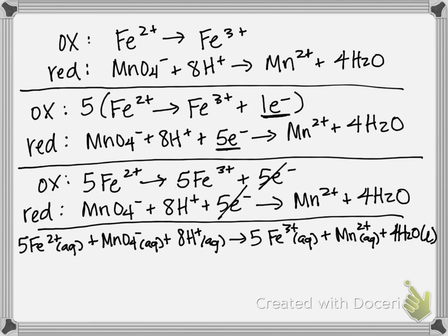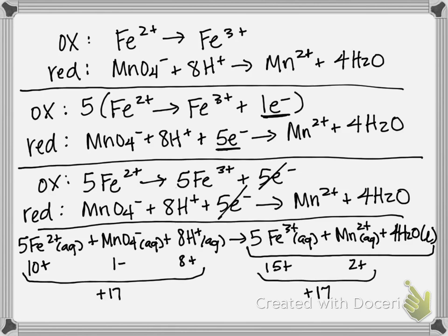If you want to go ahead and check your charges, they should both add up to plus 17. You have 5 times 2 would give you 10+, and then you have 1 minus from the MnO4-, and then you have 8 plus from the hydrogen, which gives you a total of plus 17. On the product side, you have 5 times plus 3, that's 15, and then you have 2 plus, which gives you plus 17. Charges are balanced, elements are balanced, everything checks off, and this guy right here is your final answer.